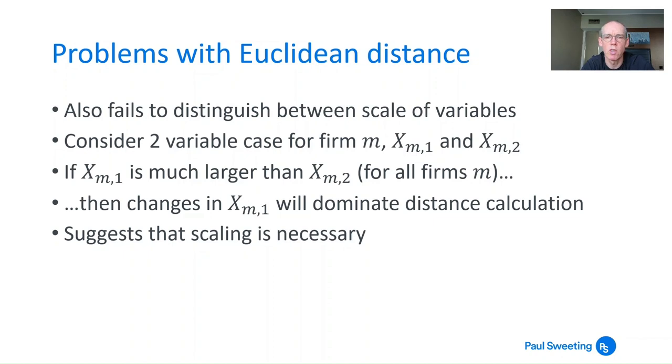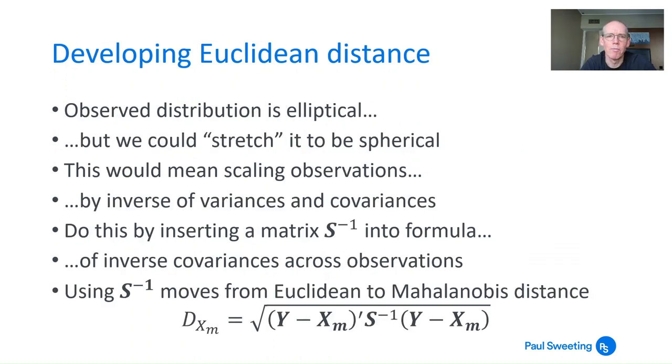If you want to develop Euclidean distance, one thing that you could do is try to stretch the observations that you've got. Move from something which is an elliptical distribution to a spherical distribution by scaling all the observations. What you want to scale it by is the inverse of the variances and covariances, so take account of the volatilities and the correlations between the different variables, and then just try to strip those out. A way that you could do this is to start with your calculation—your formula for the Euclidean distance—but in the middle stick an additional term which is the inverse of the covariance matrix for everything that you're looking at.